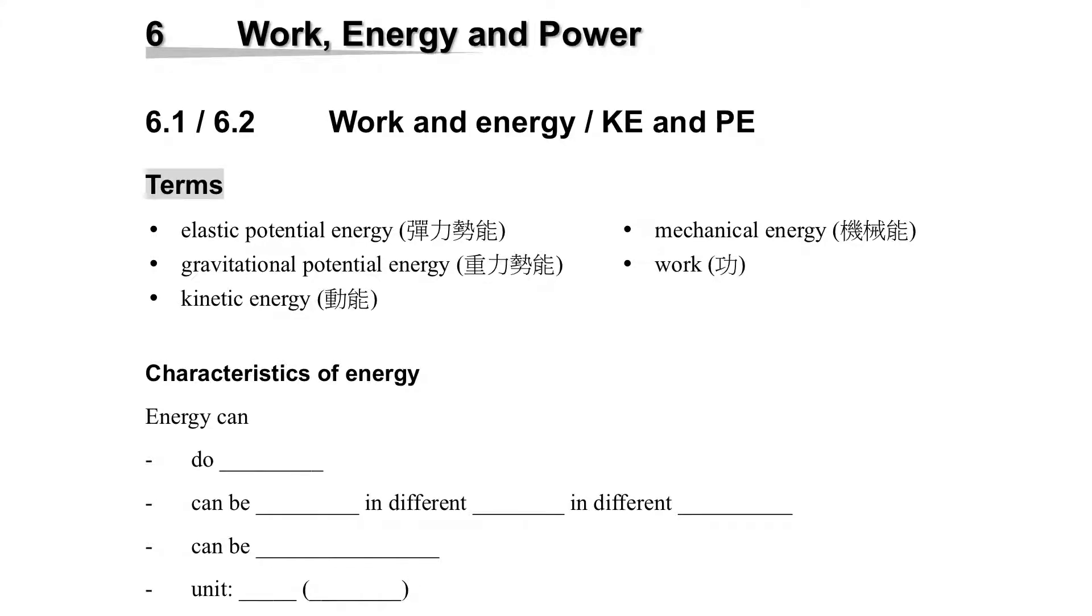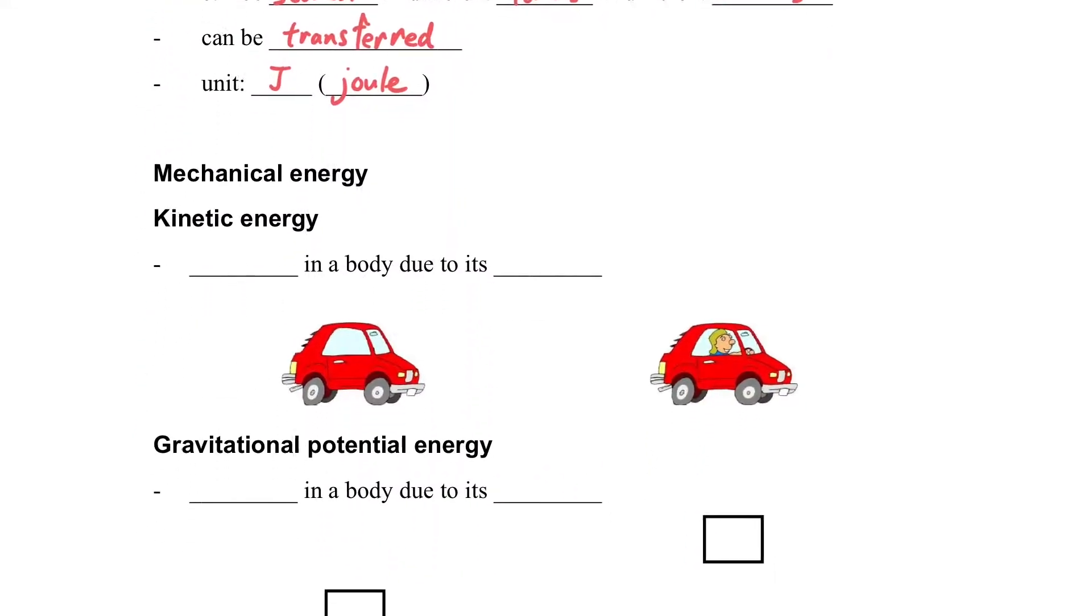We will talk about work, energy and power. So what are the characteristics of energy? It will do work, and it can be stored in different forms and in different bodies. It can also be transferred. And the unit here, we use Joule, a capital letter J to mention as the energy.